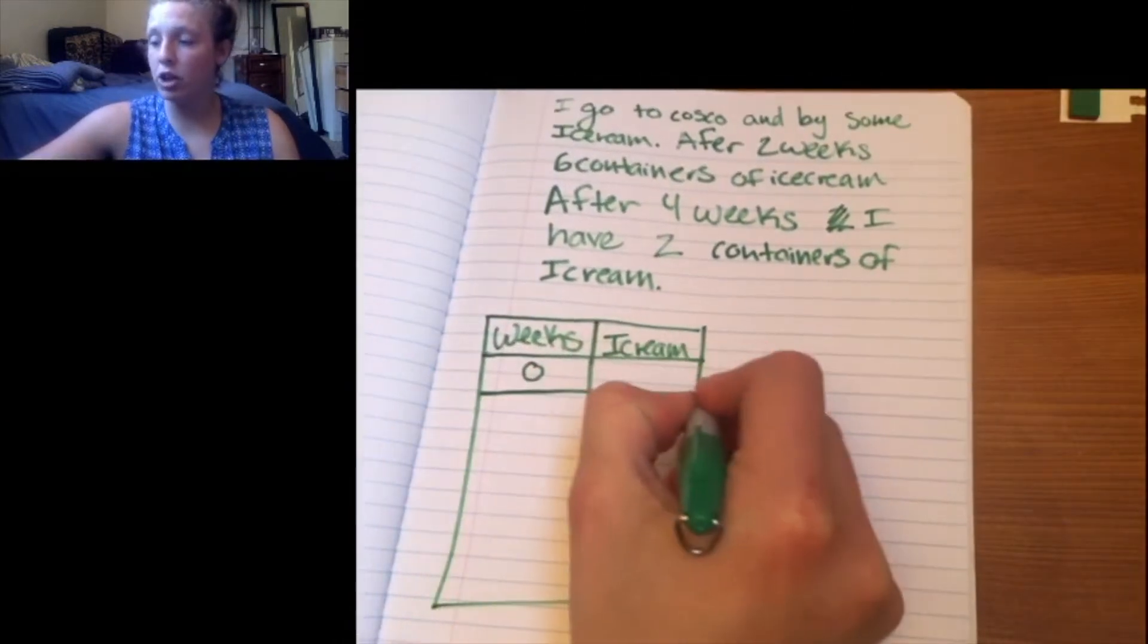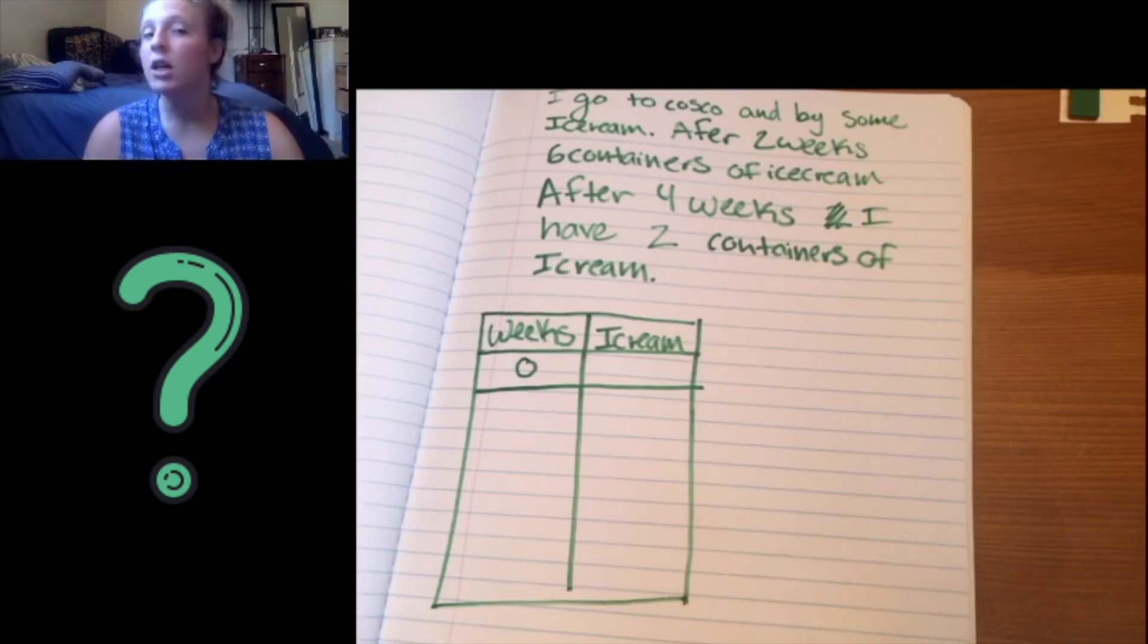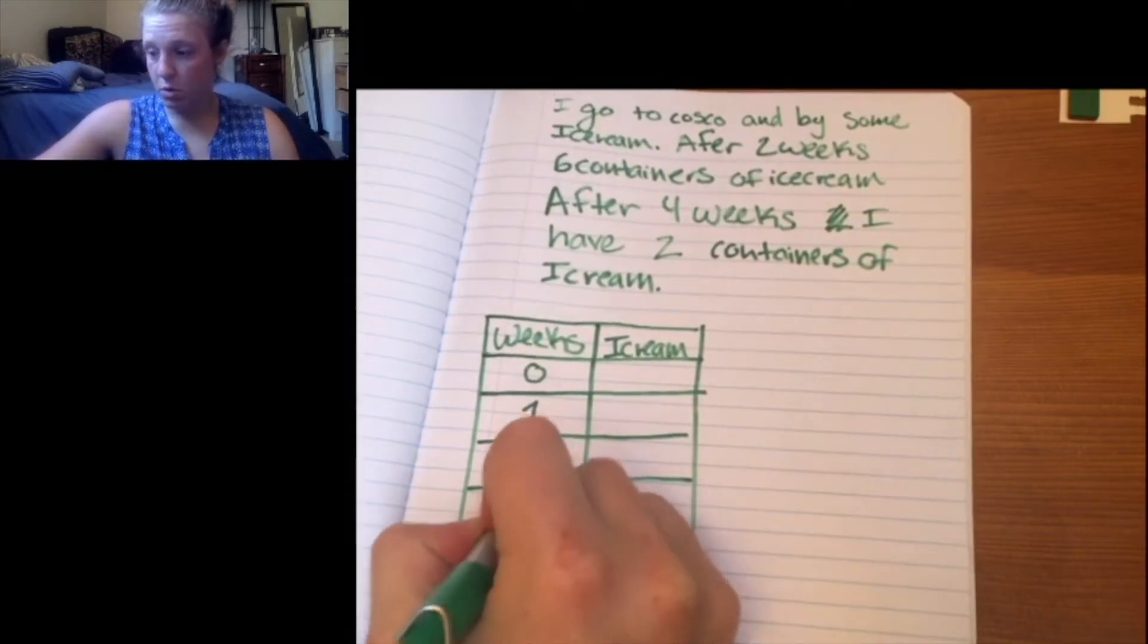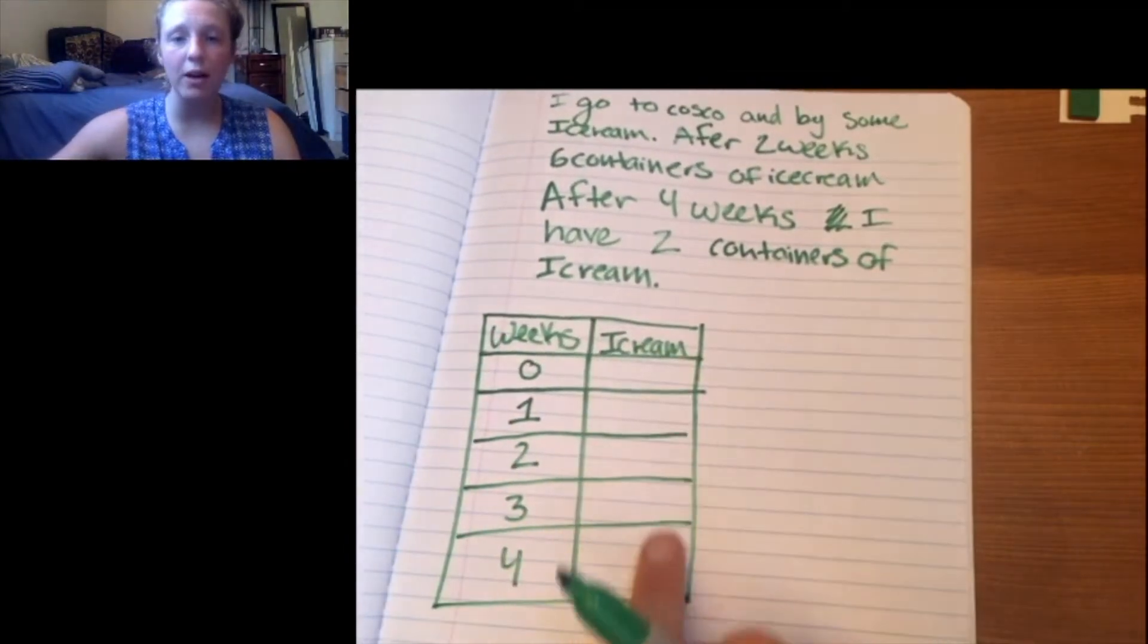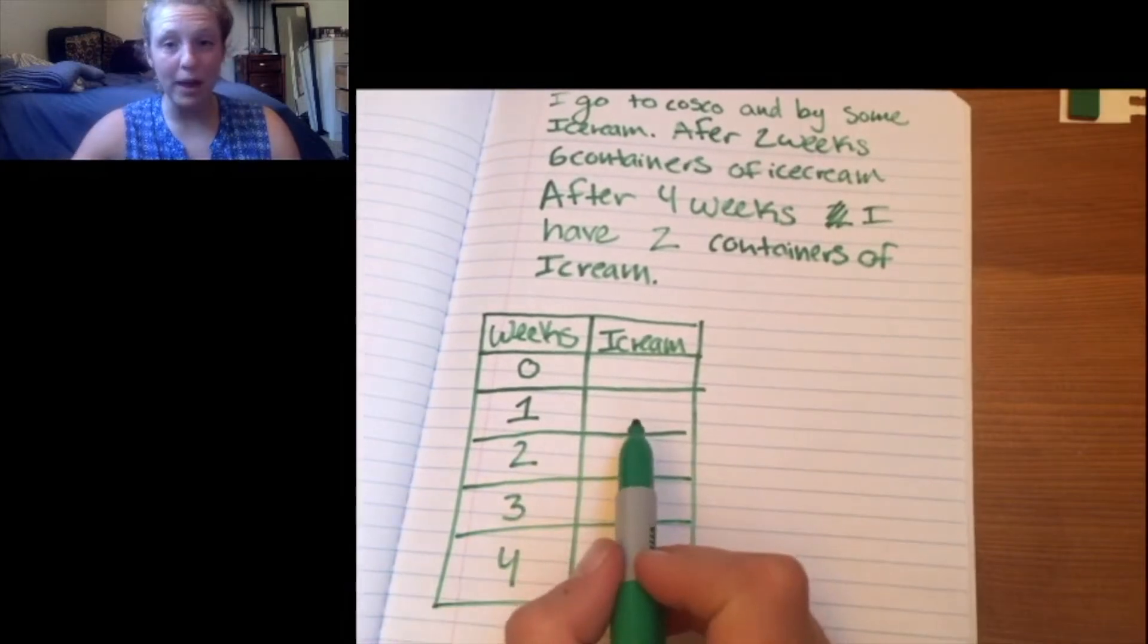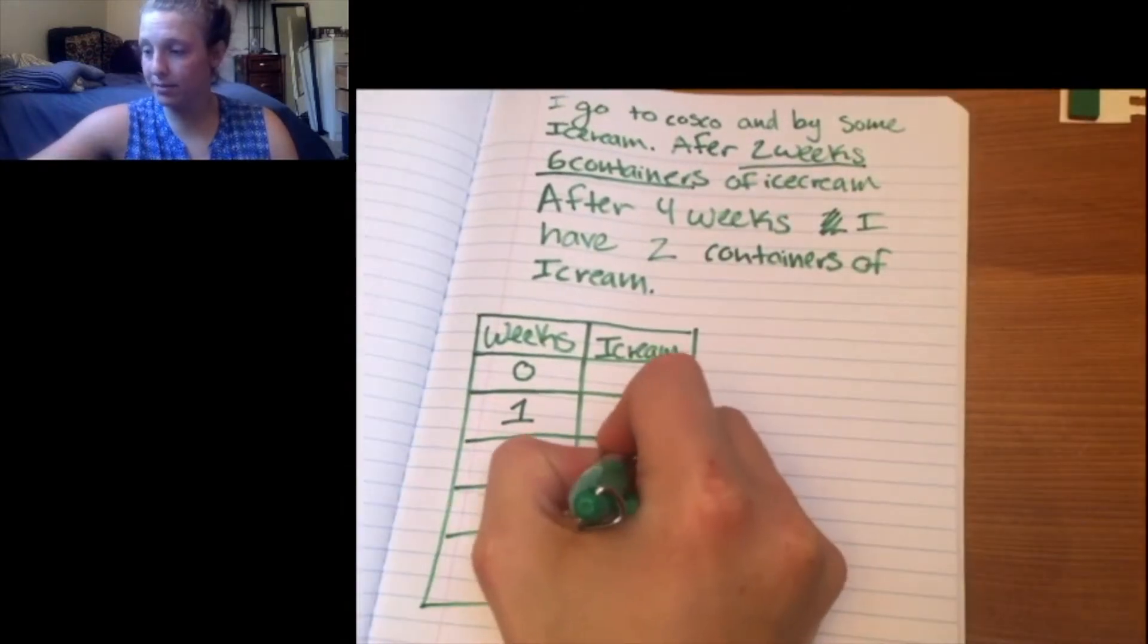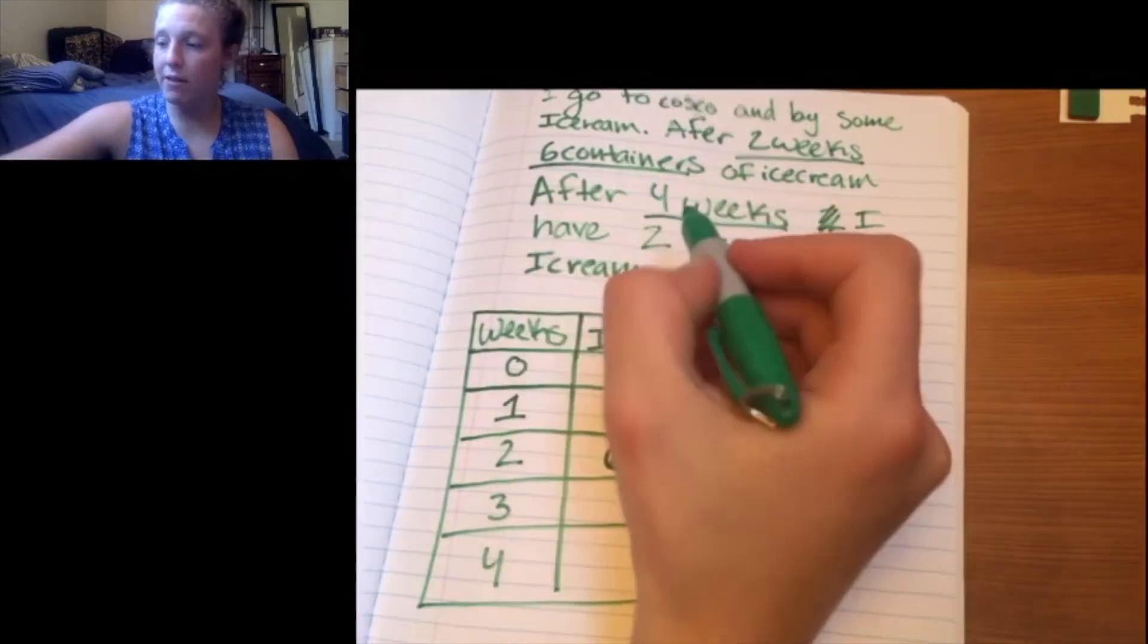And I don't actually know how much ice cream I bought. I don't remember. I threw a bunch of stuff in my car. So that's a mystery. I have week one, week two, week three, and week four. And as a reminder, you will only start seeing patterns on this column if this column is also in a pattern. So I don't want to miss anything here. So I don't know anything for one, I'm going to leave it blank, but I do know two because after two weeks, I have six containers. And the other piece of information I know is that after four weeks, I have two containers.